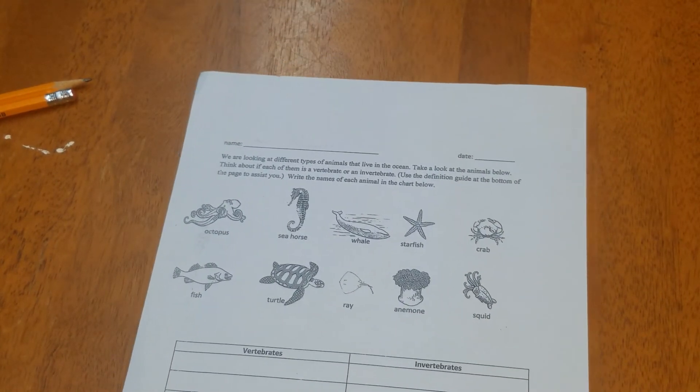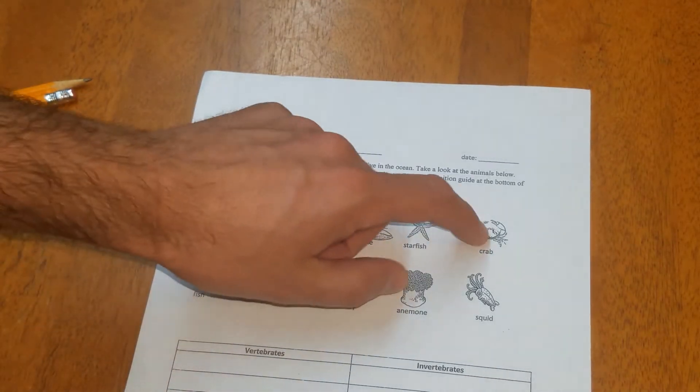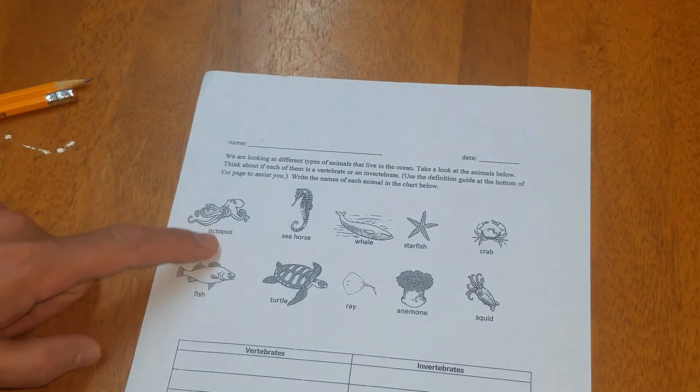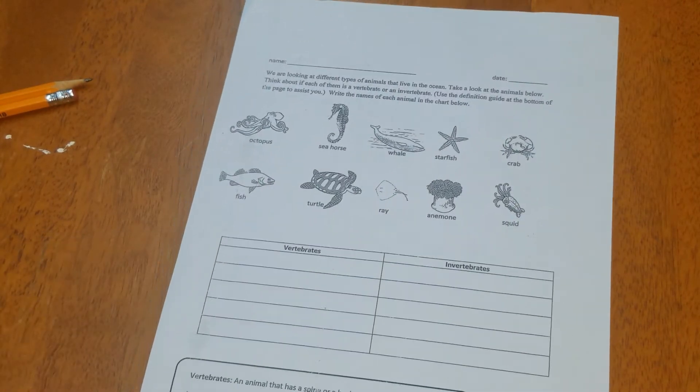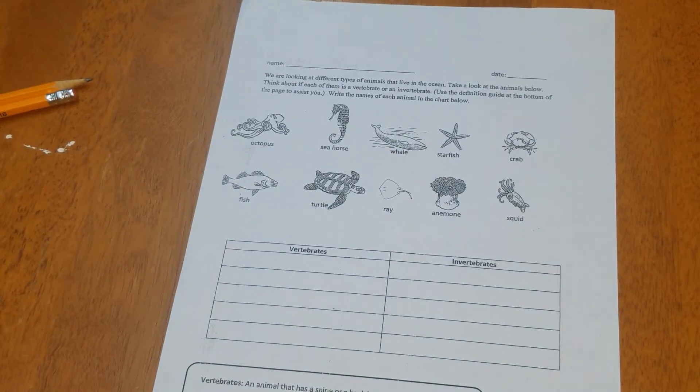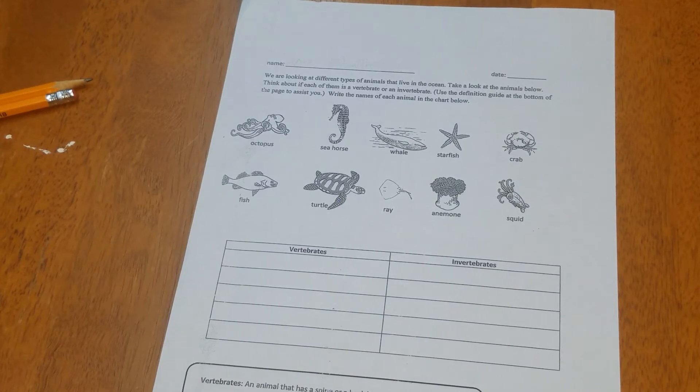So what I'd like you to do is look at these 10 animals and then go ahead and write their names in the table below as either vertebrates or invertebrates. And I'm not going to do it for you because I think you guys can handle this one on your own.